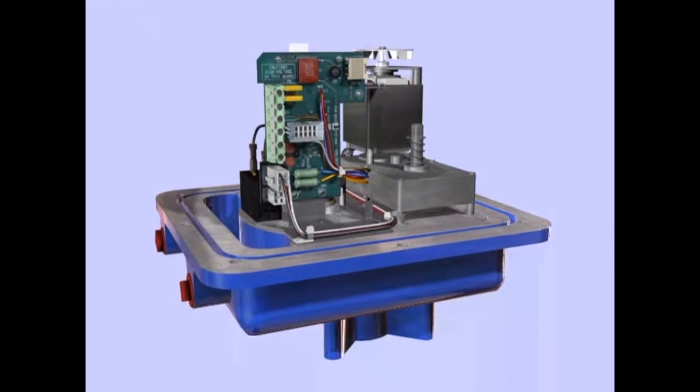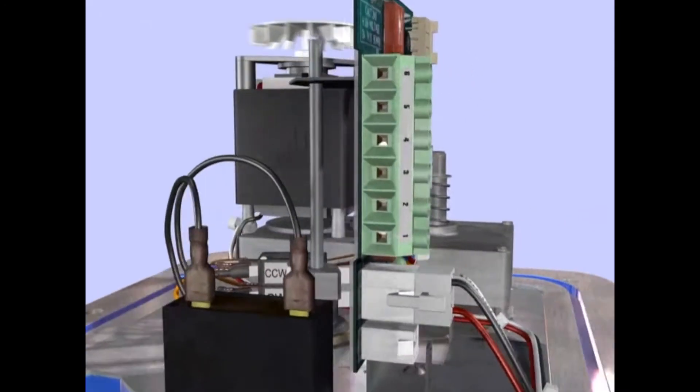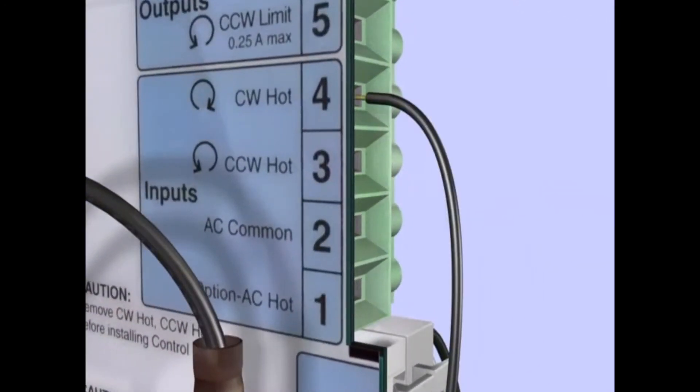Begin by connecting input wires. Connect a hot signal to Terminal 4 for clockwise operation, a hot signal to Terminal 3 for counterclockwise operation, and a neutral to Terminal 2.